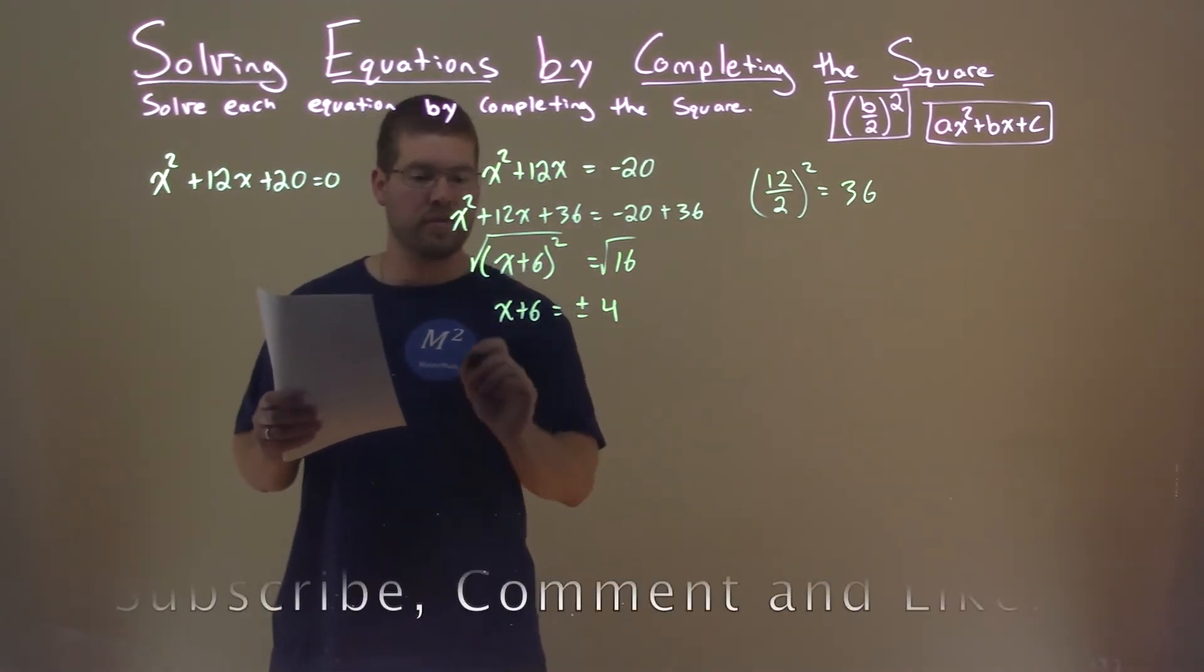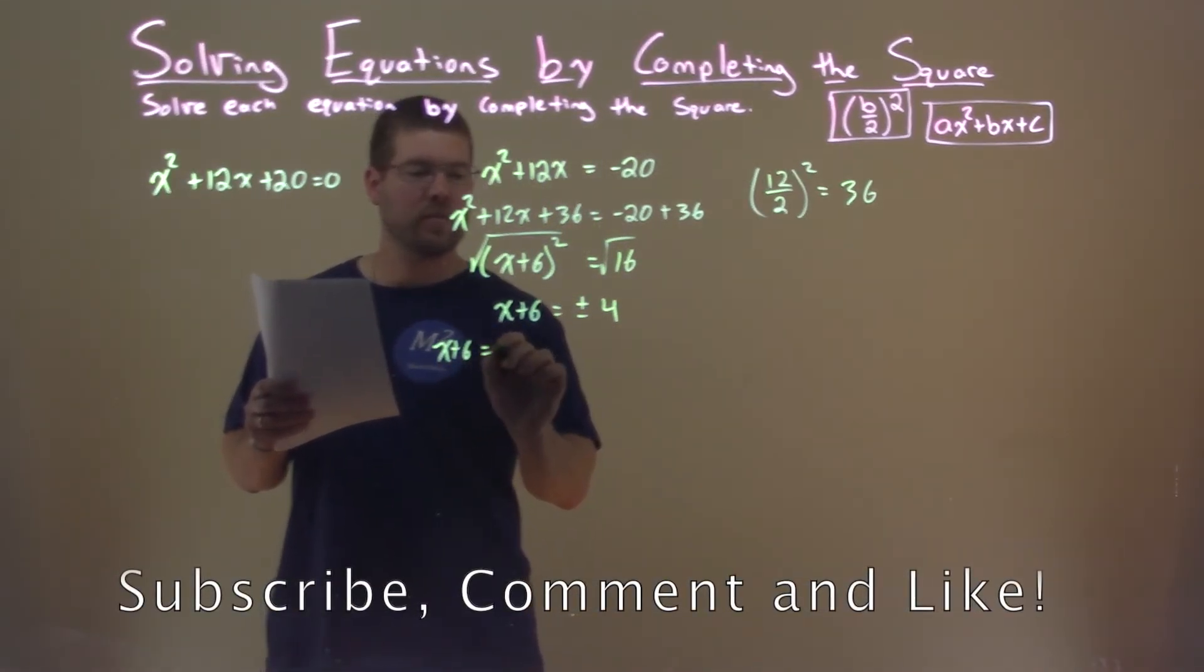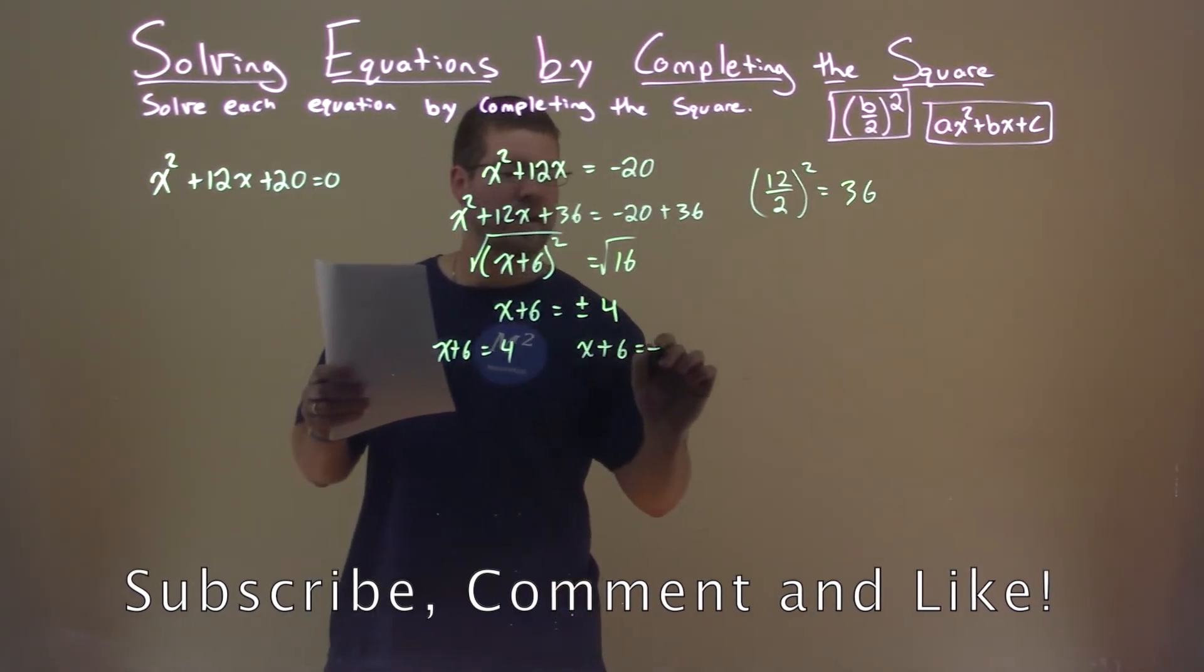We're now going to break this down into two equations: x plus 6 equals positive 4, and x plus 6 equals negative 4.